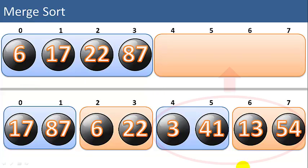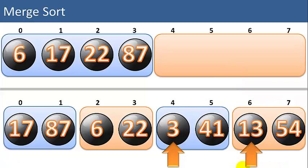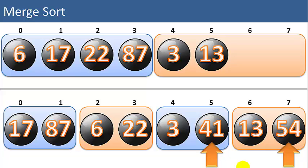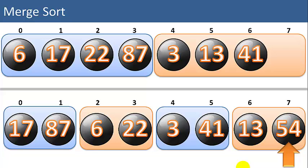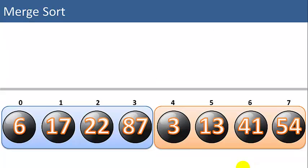Now we're going to sort the right two lists and move them into the top list. We first compare 3 to 13 — 3 is smaller. We move that pointer to 41 and compare 41 to 13 — 13 is smaller. We move that pointer over, then compare 41 to 54 — 41 is smaller. And we're done with that list, so we copy up the rest of the items in the right list. Now we have 2 lists with 4 items each that are in sorted order.